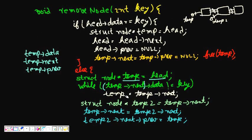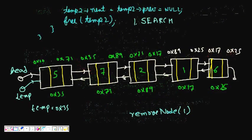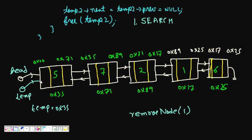We do: while (temp->next->data != key), we keep doing temp = temp->next. So we come to node 1 and compare: is temp->next->data, which is 7, equal to 1? No, so we do temp = temp->next. Now temp moves to node 7.